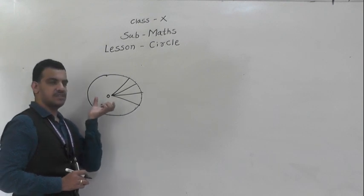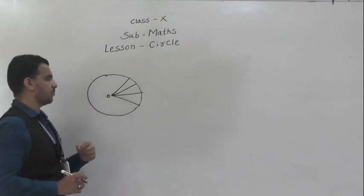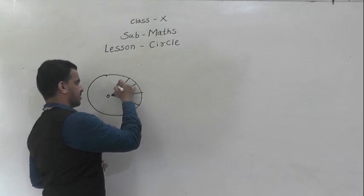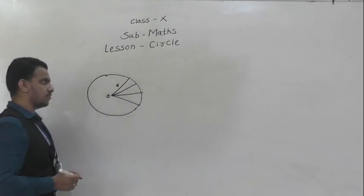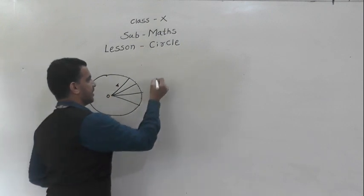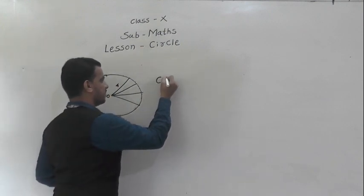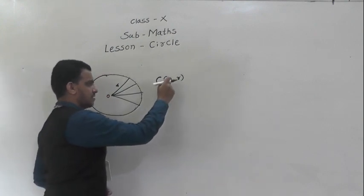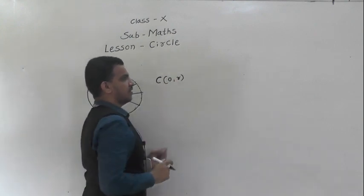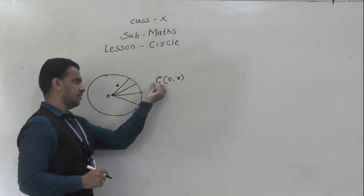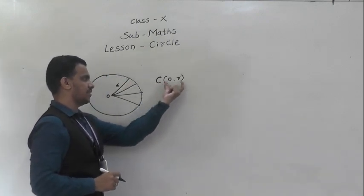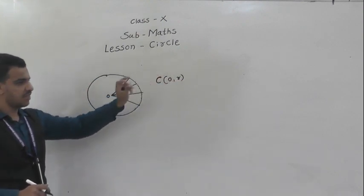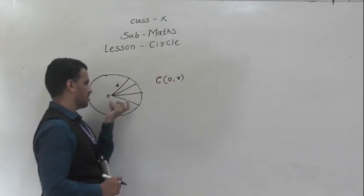This definition we learn in class nine. If this is radius, then radius is generally denoted as small r. A circle can be represented as C(O, r), where O is the center of the circle and r is the radius of the circle. So we denote circle this way: C in bracket O comma r.